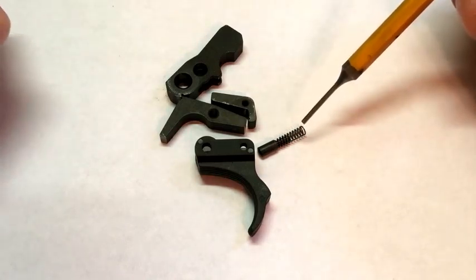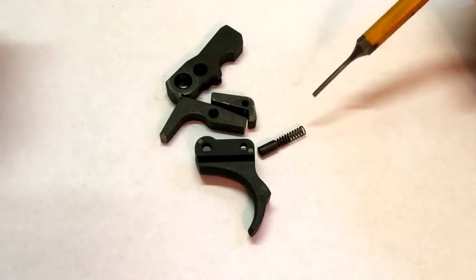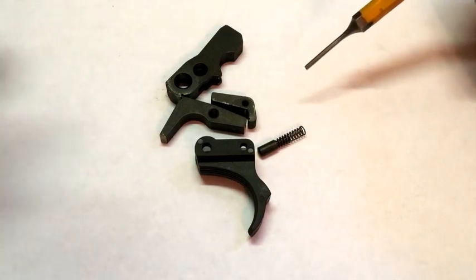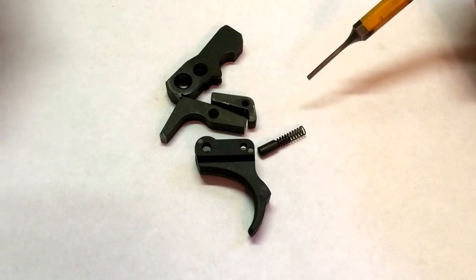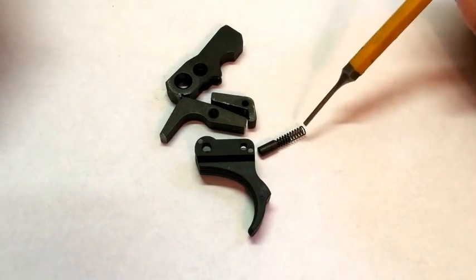To reduce the pull weight, people will either clip a coil or two off the back of the spring, which is totally acceptable, just go slow, take a coil or even half a coil off at a time, put it together and see what it did, see if it functions. Or if you bought an aftermarket hammer or something, oftentimes they will come with a lighter trigger return spring.